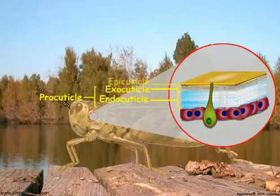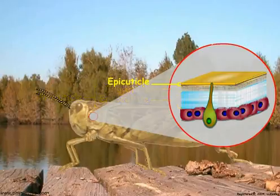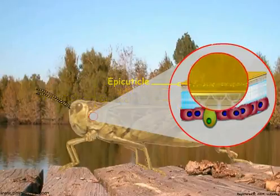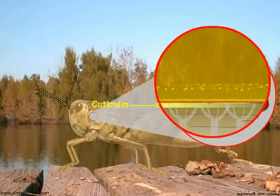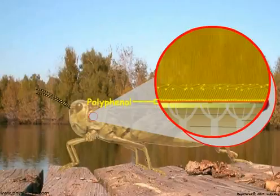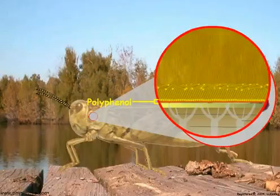Above the exo-cuticle is the epi-cuticle, which is thin and consists of four layers. Cuticulin is the innermost epi-cuticle layer and is composed of sclerotized proteins and lipids. Some layers of the cuticle may be absent in regions of the body of some insect species, but the cuticulin layer is always present. A polyphenol layer is sometimes present above the cuticulin layer and may serve as a source for the phenols used in tanning.